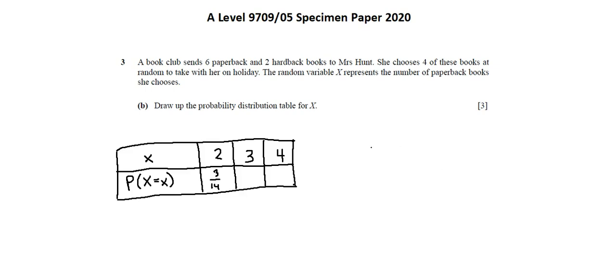For three and four, probability that X equals three. In this situation, we're choosing three paperbacks. So, we have six choose three times two choose one, that's the hardbacks, over the same denominator, eight choose four, which equals four of seven. I'll put that into the table.